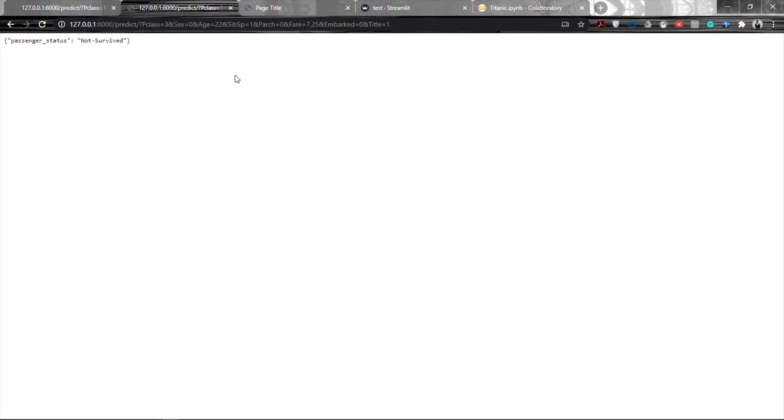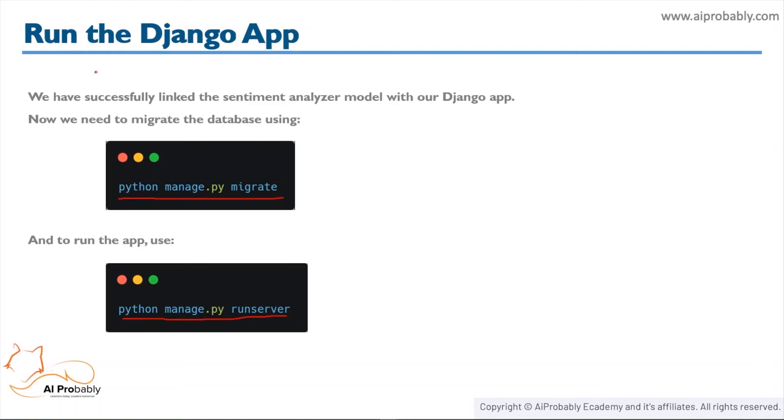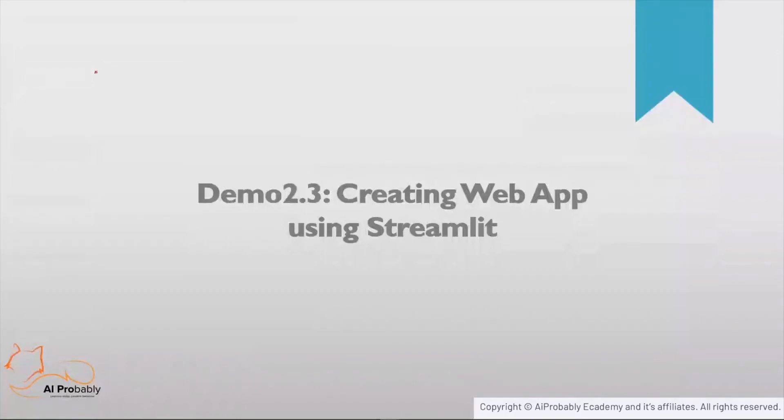After running the server, in the URL after '/predict' we define the parameters: PClass, sex, age, SibSp, Parch, fare, embarked, and title. The application extracts these fields, passes them to the model, and the model predicts. The response is stored in the response dictionary and returned as JSON — for example, 'passenger_status: not survived'. With different attributes, 'passenger_status' would be 'survived'. Our model is successfully linked with the Django app and we now have a working API.